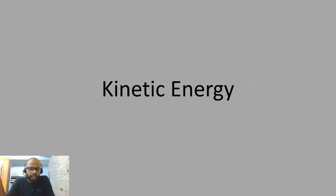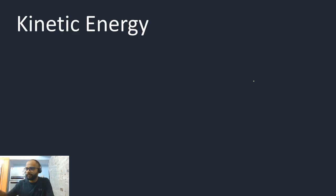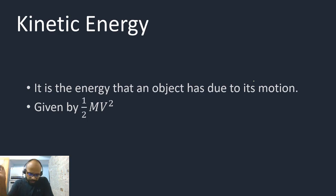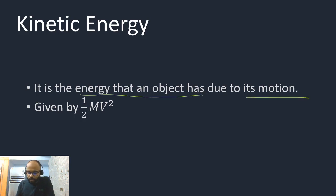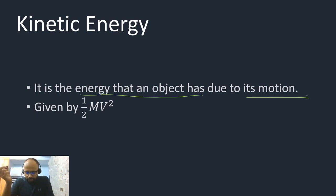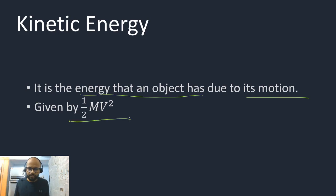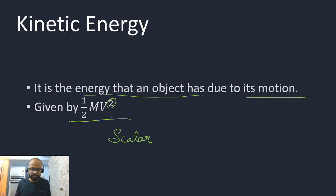Now, what is kinetic energy? Kinetic energy is the energy that an object has due to its motion. Remember what momentum was — it was the total quantity of motion a body has. When you say energy that an object has due to its motion, the formula is half mv squared. It's a scalar quantity, while momentum was a vector quantity because velocity is a vector. Here velocity is squared, so it becomes a scalar quantity. Kinetic energy is the total energy a body has due to its motion.